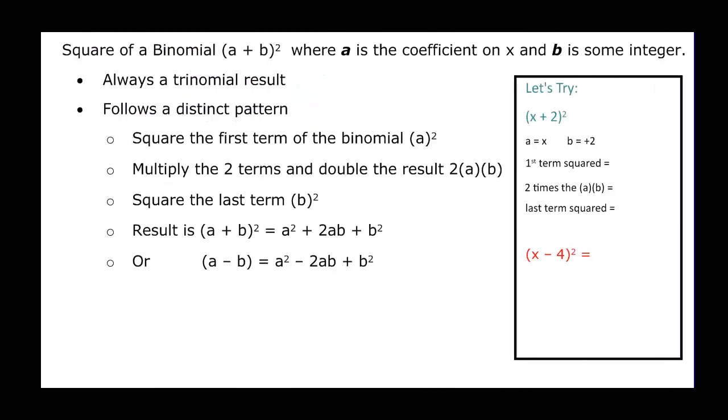Now we have a couple special products that we need to talk about. First of all is the square of a binomial. It will look something like a plus b quantity squared. It is two binomials because of the square, but it only shows you one. And a is always going to be the coefficient on x and b is always going to be some integer. So one thing you need to know, and this is so important because I have students in all types of classes that multiply a binomial squared and don't get a trinomial. That means three terms. So we need to make sure that we're getting three terms when we get our final answers here. And there is a distinct pattern.